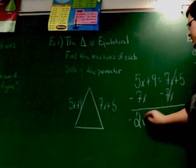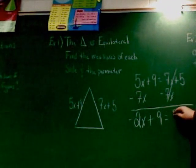And I've got negative 2x plus 9 equals 5.